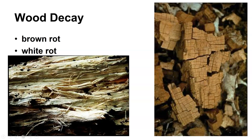When you get breakdown of lignin, you get what we call a white rot, and this can fall apart fairly easily. When you don't get breakdown of lignin, we call this a brown rot — you're breaking down the carbohydrate on the inside but not breaking down the phenolic lignin, so it stays more together.